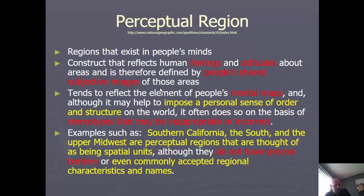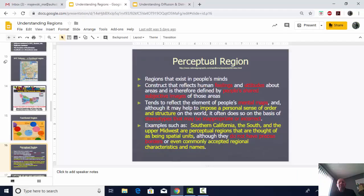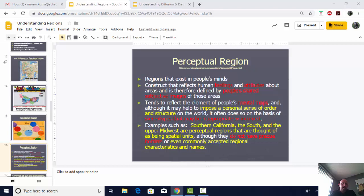Perceptual regions aren't always accurate — they may sometimes be inappropriate or incorrect — but they are really helpful to geographers who want to learn about regions that may not be obvious on a map. By using the perceptions of people who live in an area, we can detect regions we otherwise might not find. Southern California is a perceptual region — it means different things to different people with no clearly marked boundaries. So is 'the South,' 'the upper Midwest,' 'downtown,' or ethnic neighborhoods like Chinatown, where people may have different ideas of where it begins and ends.